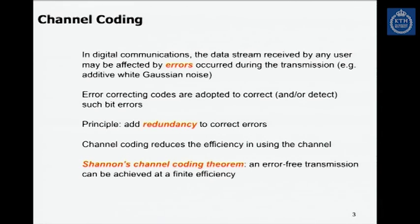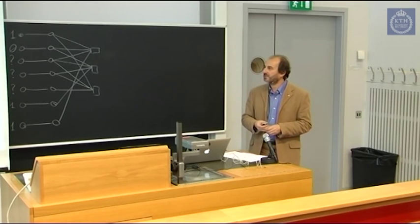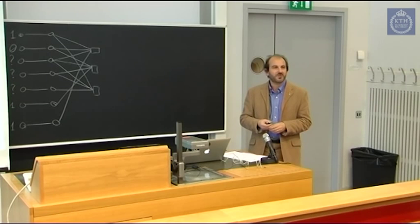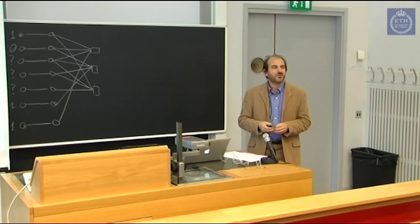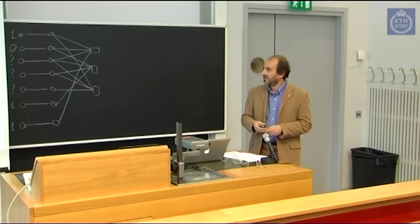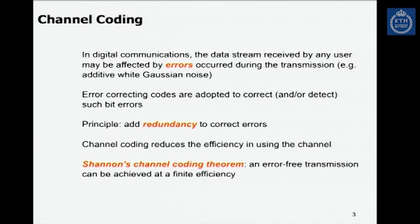So, channel coding. We all know that in digital communication we have errors when we want to transmit some information. Error correcting codes are adopted to correct, and in some cases detect, errors. The principle in order to correct or detect errors is to add some redundancy. Shannon's channel coding theorem is the foundation of our theory about error correcting codes, because it tells us exactly what efficiency we can reach and what the relation is between the redundancy and the efficiency of our correcting strategy.